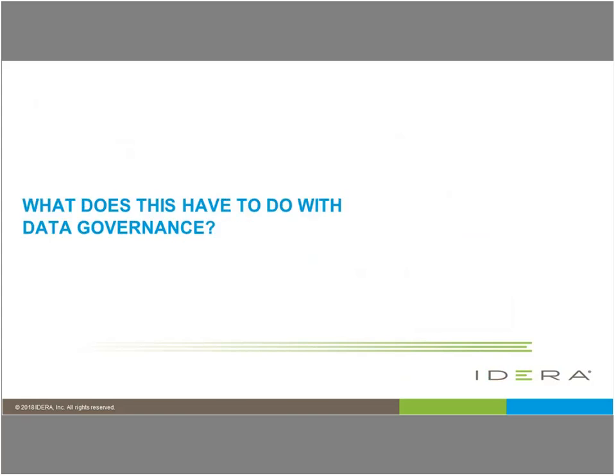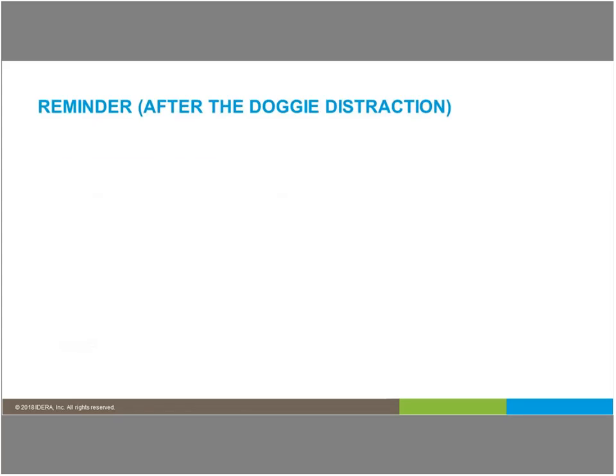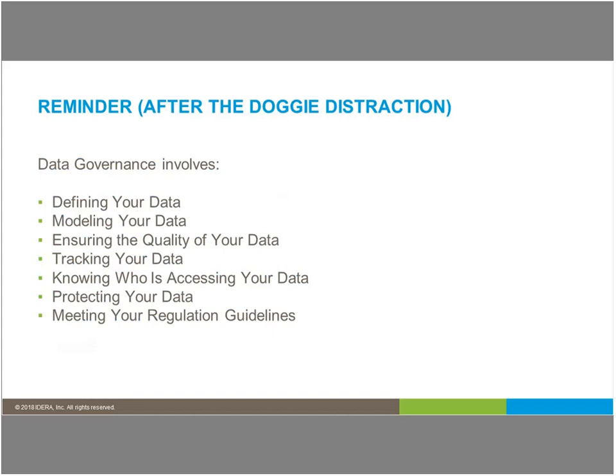So what does this have to do with data governance? The reminder after my doggy distraction is that data governance involves defining your data, modeling your data, ensuring the quality of your data, tracking your data, knowing who's accessing your data, protecting it, and meeting your regulation guidelines. In the next steps I will break down each of these bullets separately, show you a business process diagram meant to facilitate the conversation between people, and then show additional examples of how you might build your own business process diagrams to get conversations in your organization going regarding all the different elements of data governance.